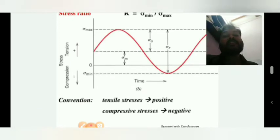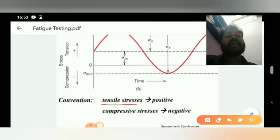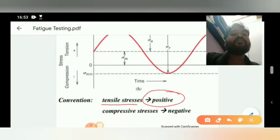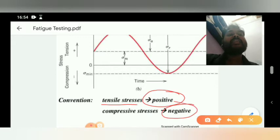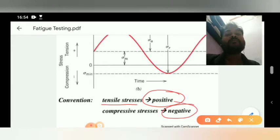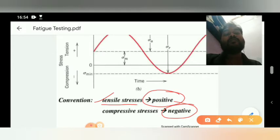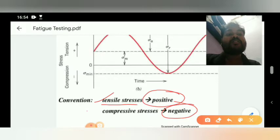Tensile stress is positive and compressive stress is negative. So if maximum stress is tensile, it is positive, and compressive stress is the minimum stress, which is negative.